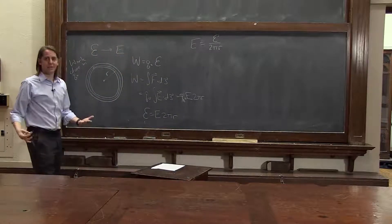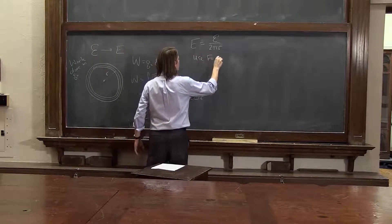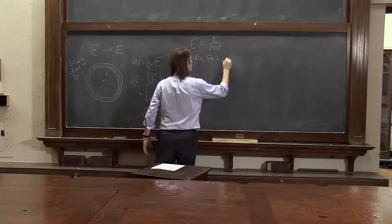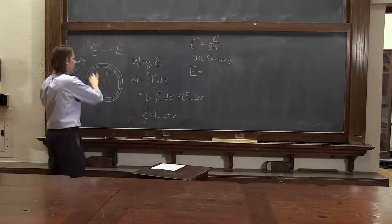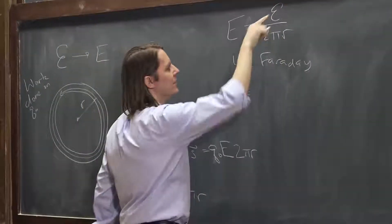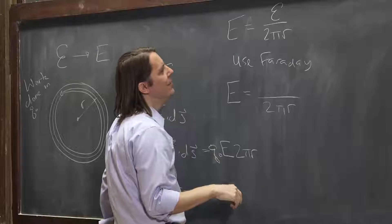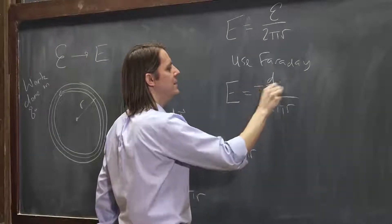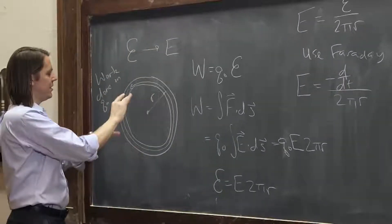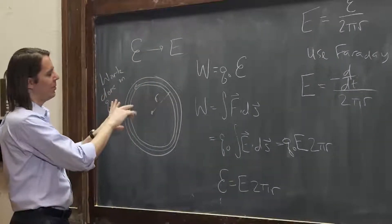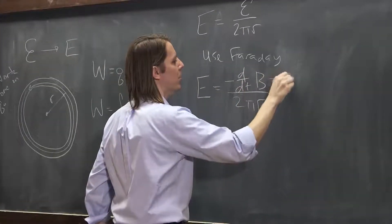But the EMF depends on the magnetic field. So now we can use Faraday's law and say that the E field, and we're just doing magnitudes here, we're not worrying about all the directions, the magnitude of the EMF equals, let's see, 2πr on the bottom. The EMF is minus d/dt of the B field times the area. Well, the B field is changing in time, that's how we set it up. The area's constant, it's just πr². So B times πr².